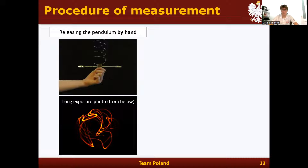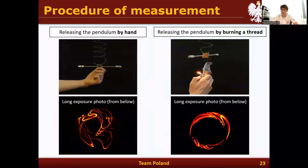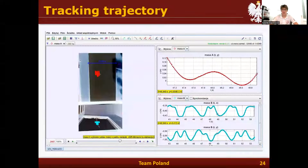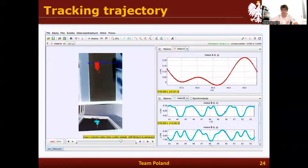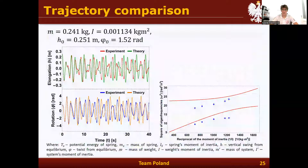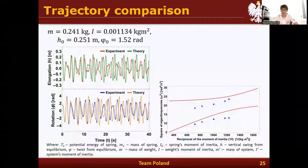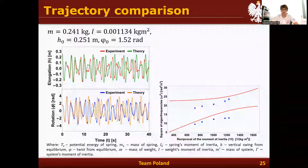To get reliable data, we also needed a procedure to release the pendulum. First, we released the pendulum by hand. However, on a long-exposure photo taken from below, you can see that it oscillated in the horizontal plane and wasn't stable. So we decided to change the releasing method by burning a thread, which gave us a stable pendulum. We then analyzed the motion in Tracker software in both coordinates simultaneously.